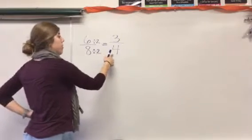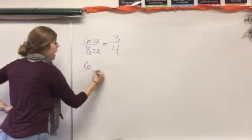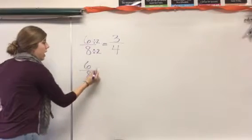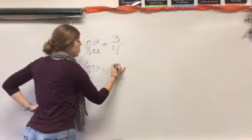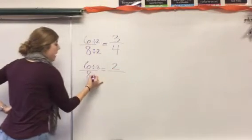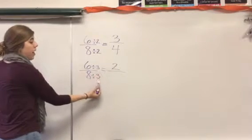The tricky thing about the division way is if I have 6/8, okay, I can divide 6 by 3, right? That equals 2. If I divide 8 by 3, remember whatever you do to the top, you have to do to the bottom.